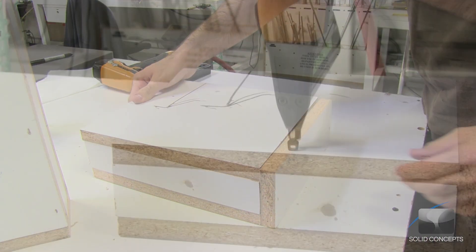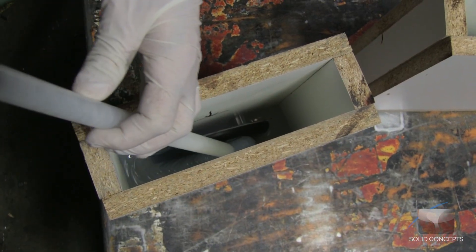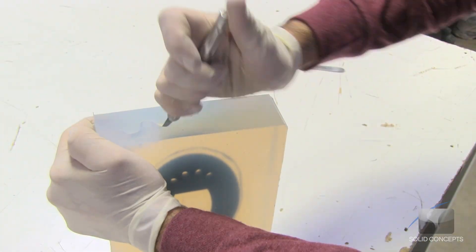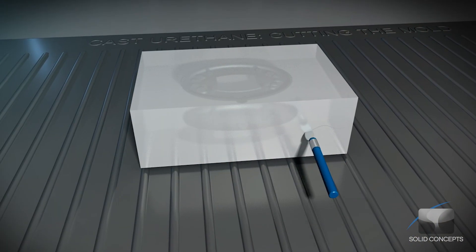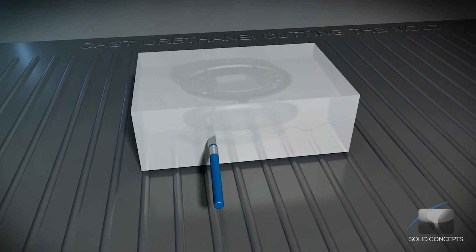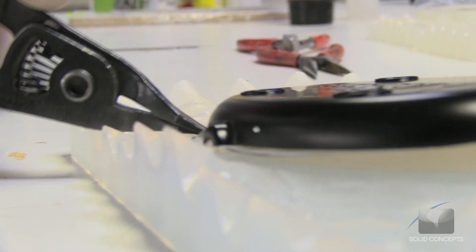Next, the mold is created by pouring a catalyzed liquid silicone into a custom fitted box holding the master pattern and its associated gating and venting system. The solidified platinum silicone is then strategically cut along the parting line and the master pattern is removed.